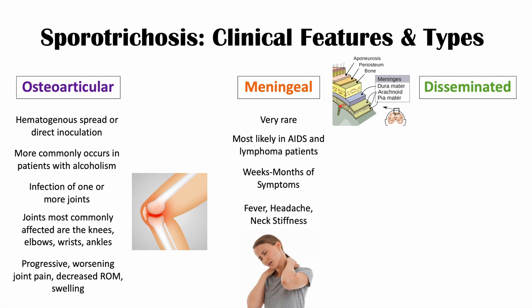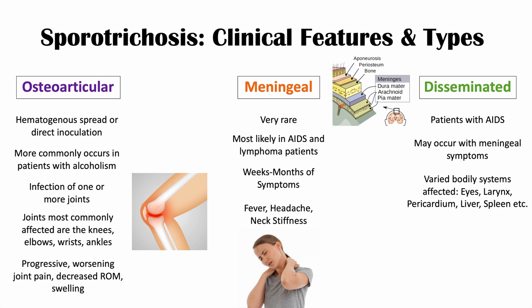The last subtype is disseminated sporotrichosis, where the infection spreads throughout the entire body. This is seen in patients with AIDS and other immunocompromised patients, and may also include meningeal symptoms. Disseminated sporotrichosis is very rare, but when it occurs it can lead to symptoms in a variety of bodily systems, including the eyes, larynx, pericardium, liver, spleen, and many other parts of the body.